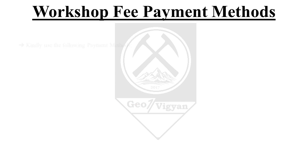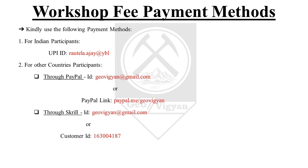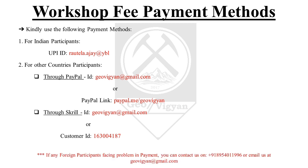For payment methods: participants from India can pay via UPI ID. Participants from outside India can pay via PayPal or Skrill. All payment details are visible on screen. If any international participants face problems with payment, you can contact us on the given number or email us at jiovigyan.com.